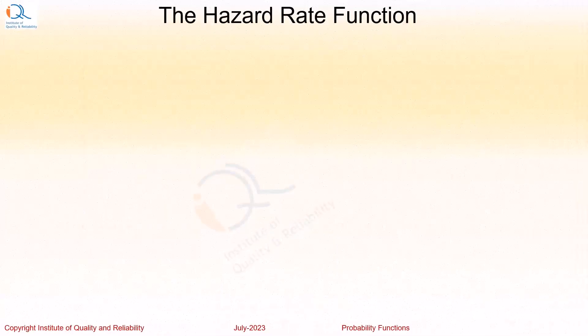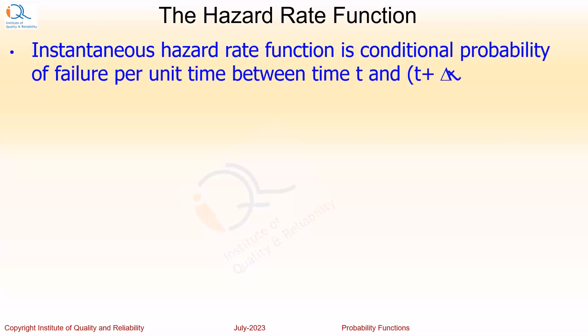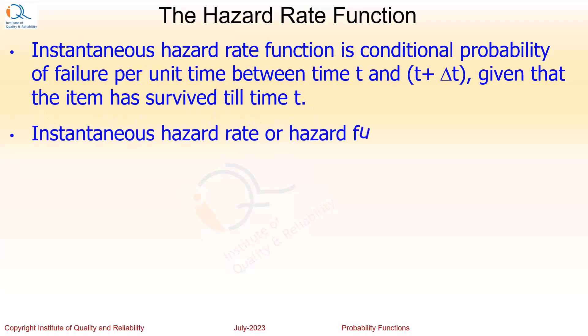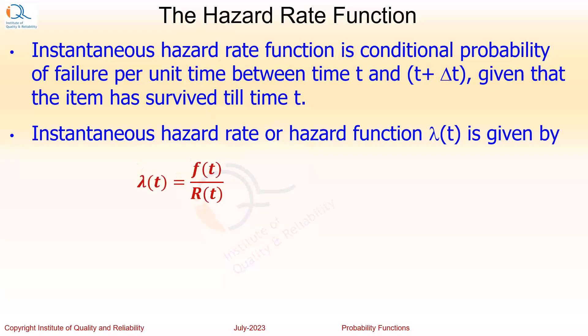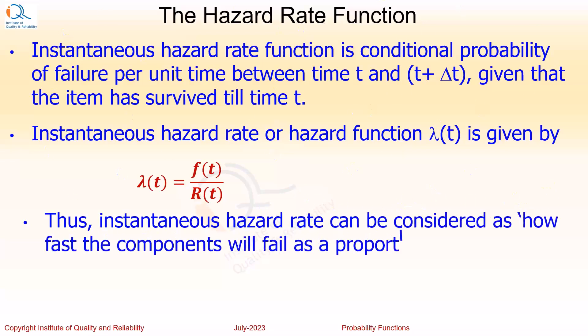Let us now understand the hazard rate function λ(t). The instantaneous hazard rate function is the conditional probability of failure per unit time between time t and t plus delta t, given that the item has survived till time t. The instantaneous hazard function λ(t) is given by f(t) divided by R(t), where f(t) is the probability density function and R(t) is the reliability function, both at time t. Thus the instantaneous hazard rate can be considered as how fast the component will fail as a proportion of surviving components.